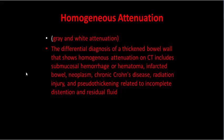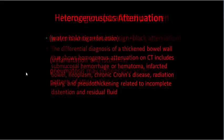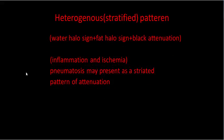Further differential diagnoses for homogeneous attenuation include infarcted bowel, neoplasms, Crohn's disease, radiation injury, and thickening related to incomplete distension and residual fluid. The next pattern is heterogeneous stratified attenuation of the bowel wall, featuring water halo and fat halo with black attenuation.